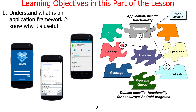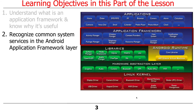Before we talk about the application framework layer, it's probably useful to know a little bit more about what an application framework is, because otherwise it's a little hard to understand why they have a layer about it. We'll talk about what an application framework is first, and then I'll show you how Android has a bunch of them. It should actually be called the application frameworks layer because there's a bunch of frameworks, not just one. We'll also talk about the common system services that are implemented in the Android application framework layer.